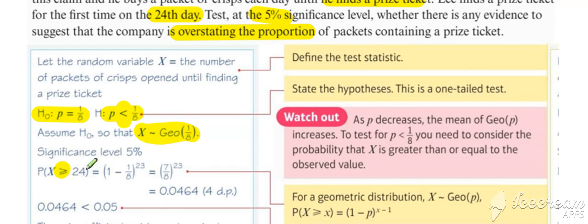So for geometric distribution, if we're testing less than an eighth, if it's less than an eighth, that would cause the expected value to go up. So therefore, we are looking at the probability of greater than or equal to our evidence.